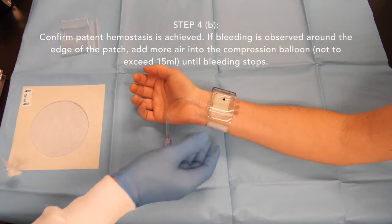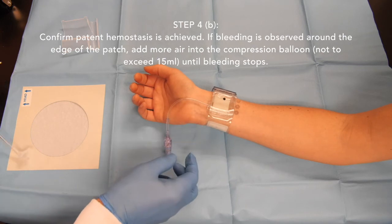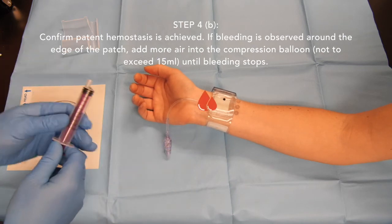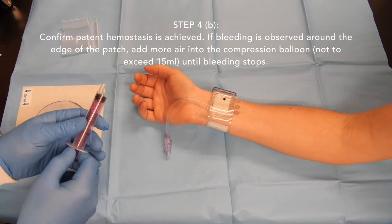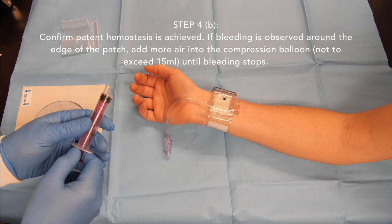Confirm patent hemostasis is achieved. If bleeding is observed around the edge of the patch, reconnect an air-charged syringe to the air valve and add more air to the balloon in 2 ml volume addition steps until bleeding stops. Total addition of air to the balloon should not exceed 15 ml.